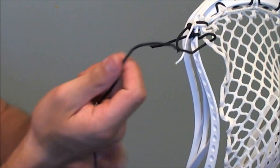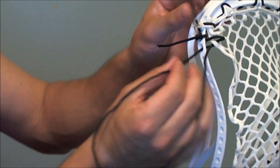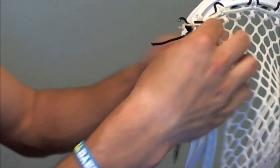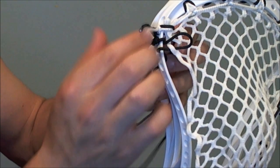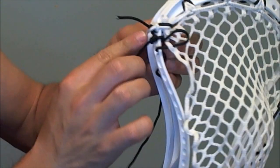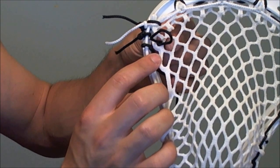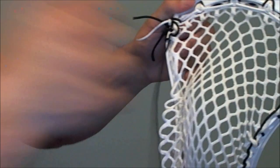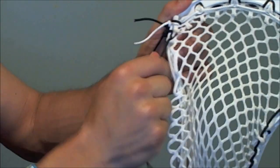In through the outside of the sidewall, and then back, see if I can get you a clear view, up through the bottom of the mesh under the loop. And I'll show you a little slower for the next one as well. I'm going to pull that nice and tight.